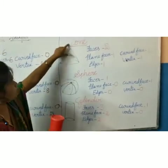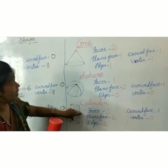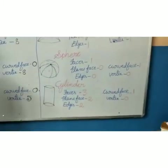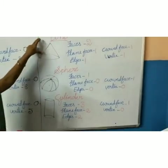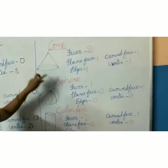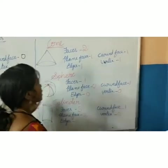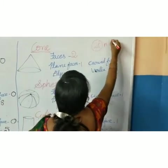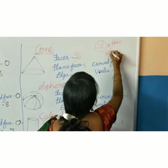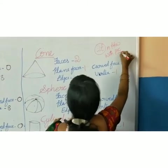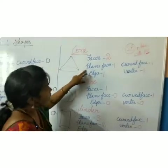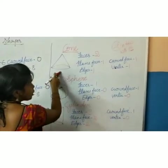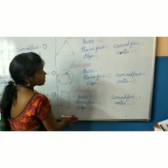So today we are going to discuss cone, sphere, cylinder. This is homework for you children. Cone, sphere, cylinder — everything you should write, each one two times in your homework book. With the pictures — you have to draw the pictures and write how many faces, how many edges, how many vertex. You have to write completely with neat handwriting and draw the pictures also. Understood children? This is the homework for you.